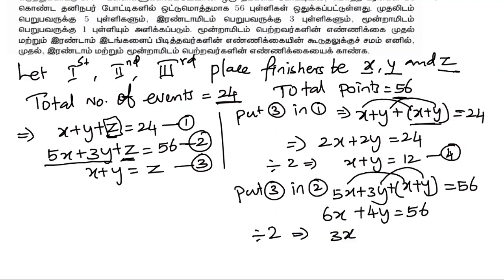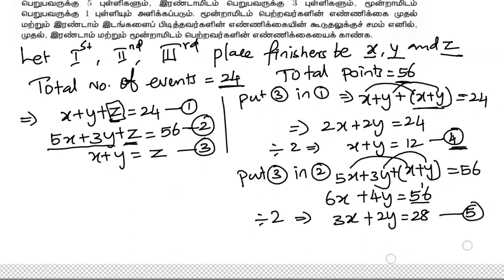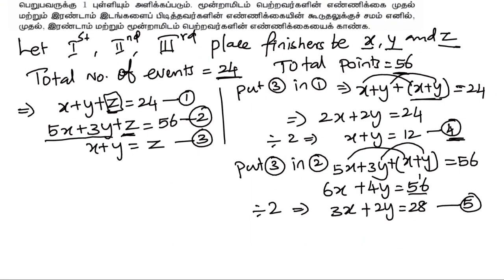Multiplying equations: 3 times 2 is 6, giving 6x. 2 times 2 is 4, giving 2y. This gives us equation number 5. Equation number 4 is multiplied by 2 to eliminate variables.